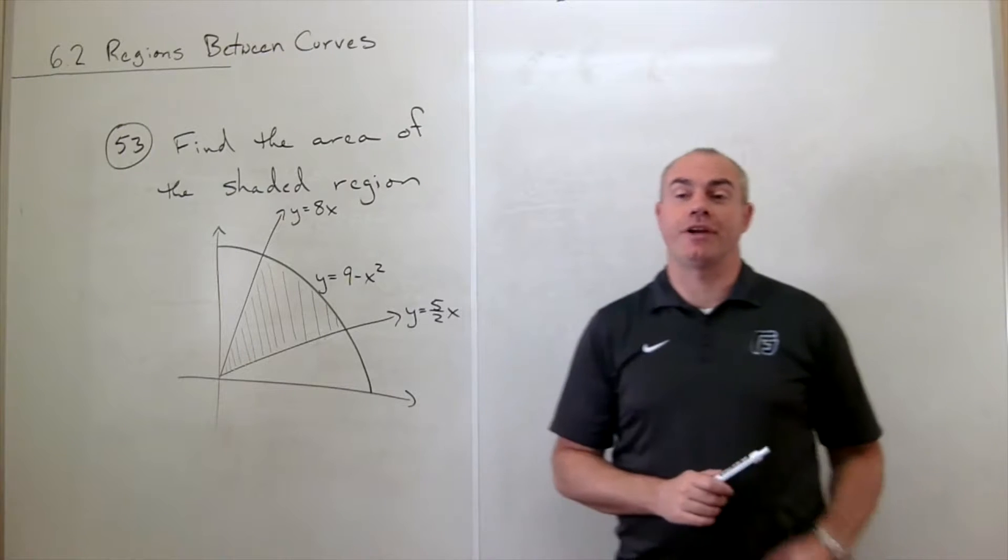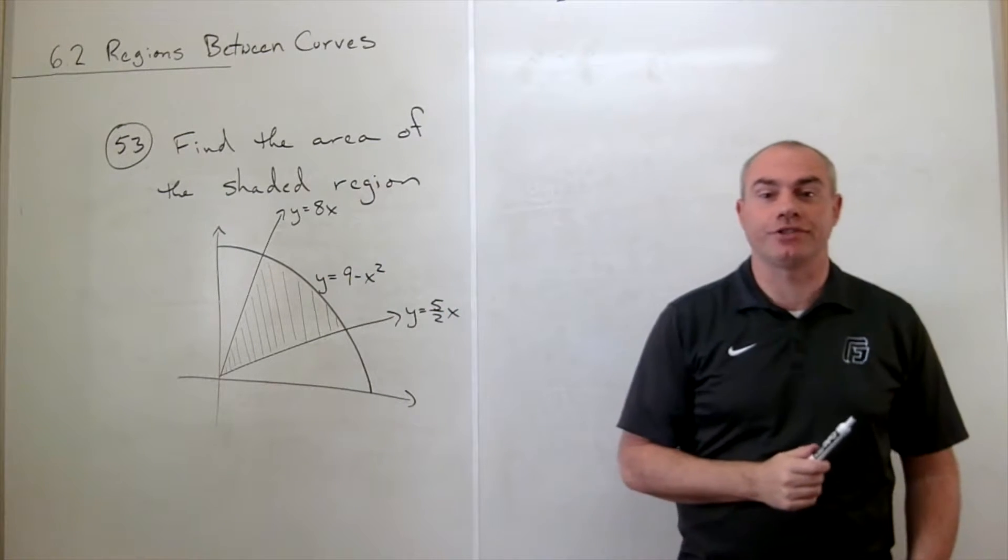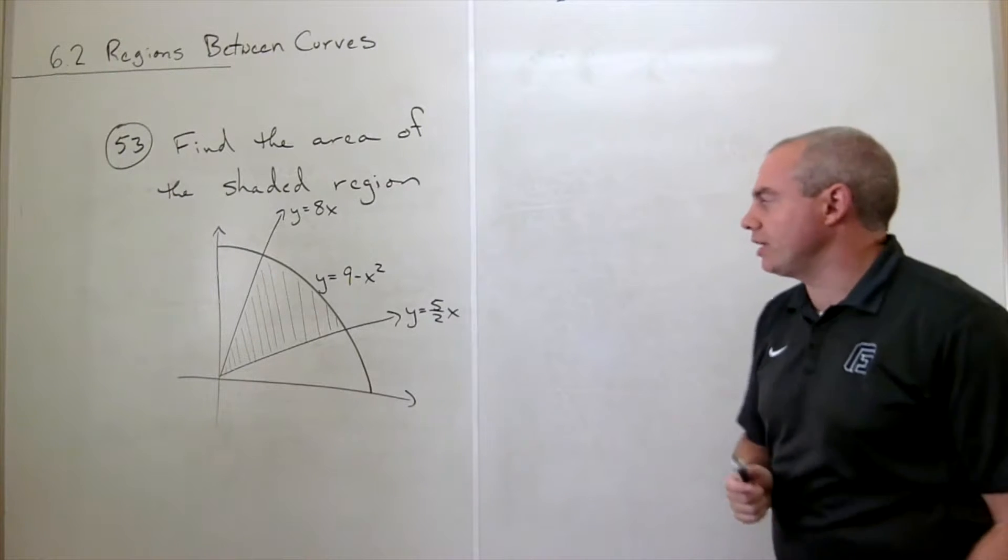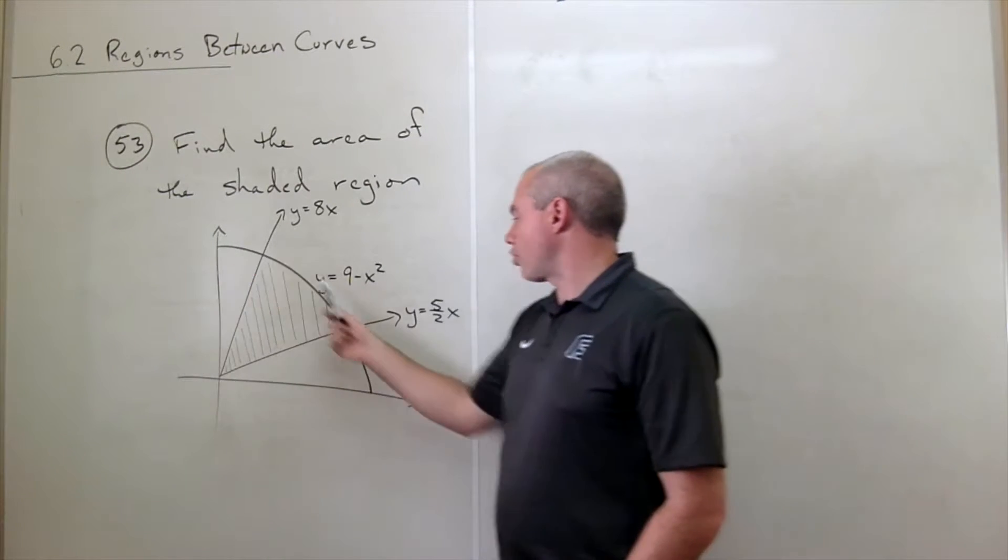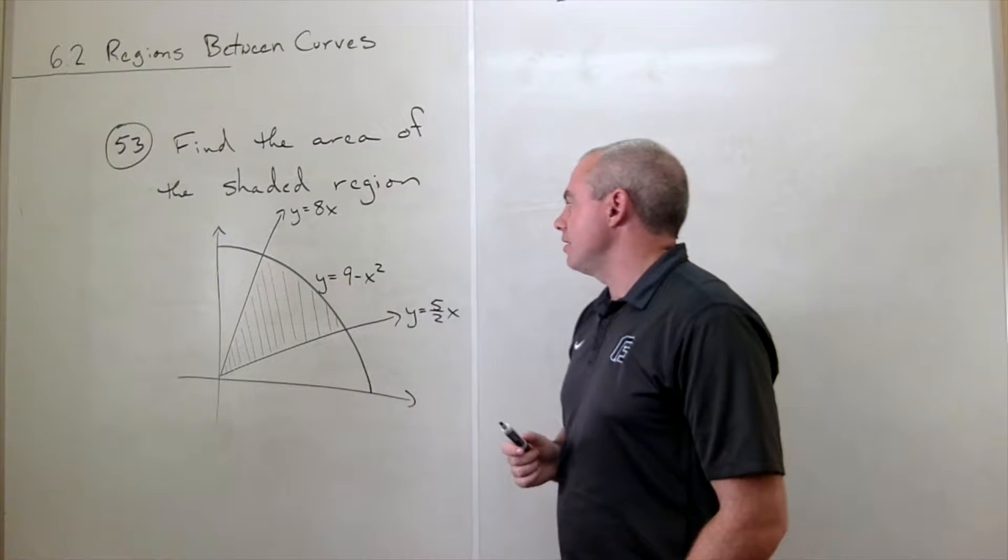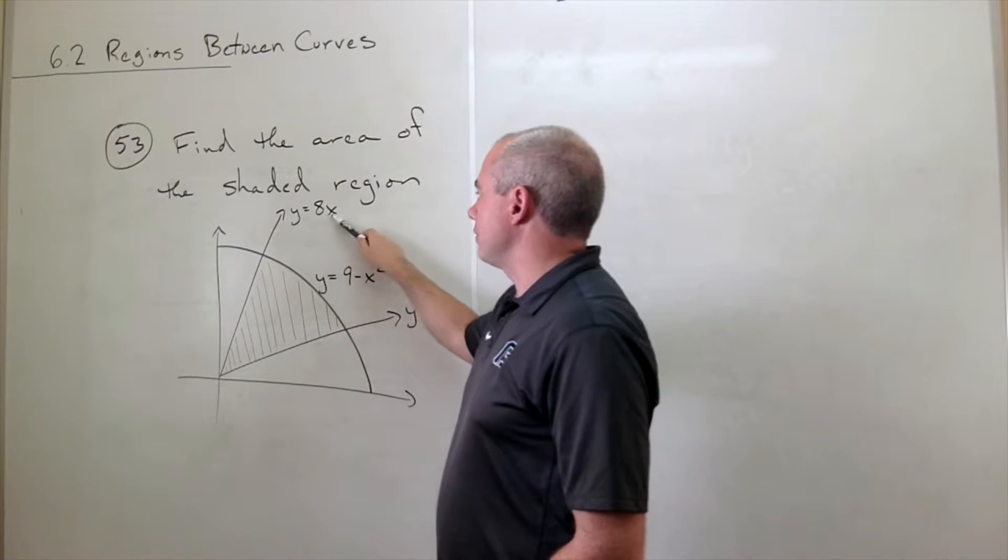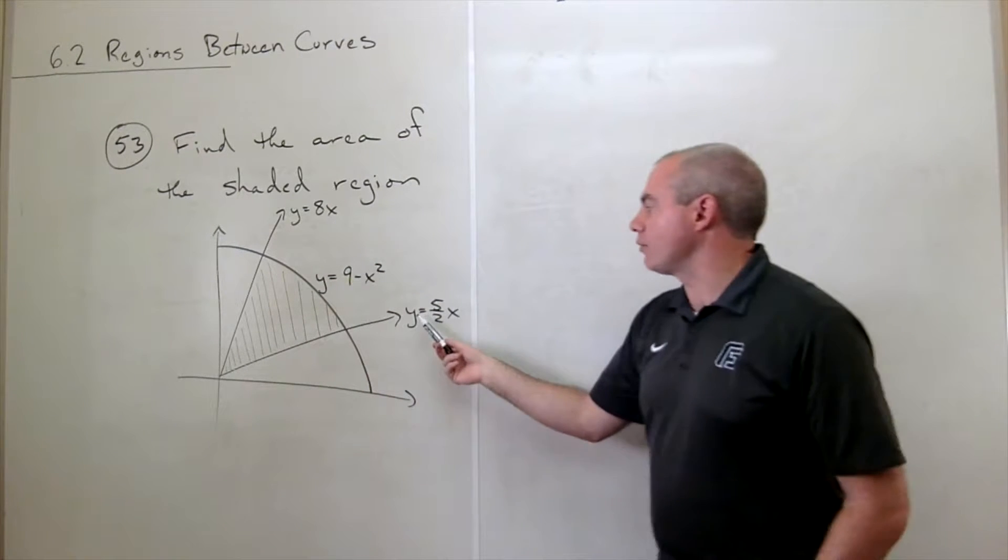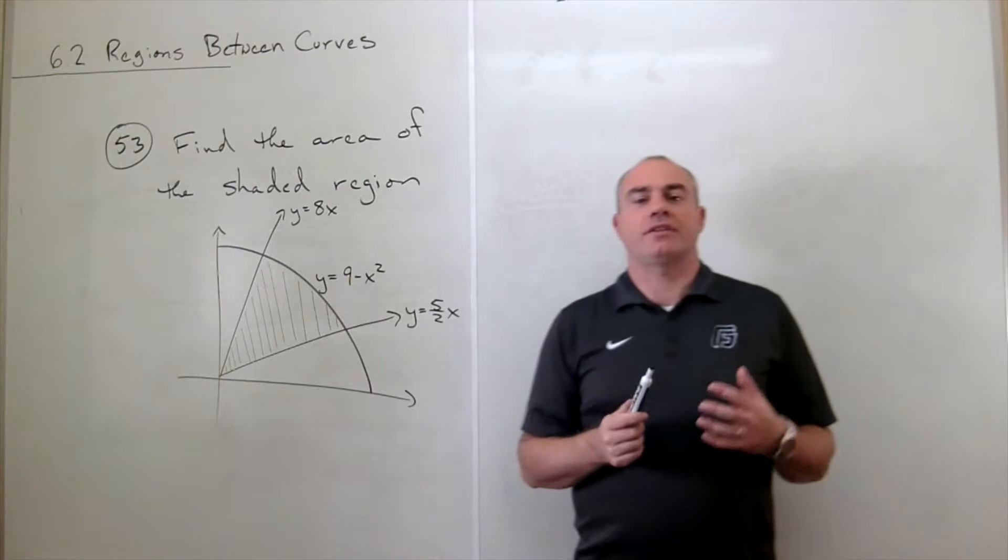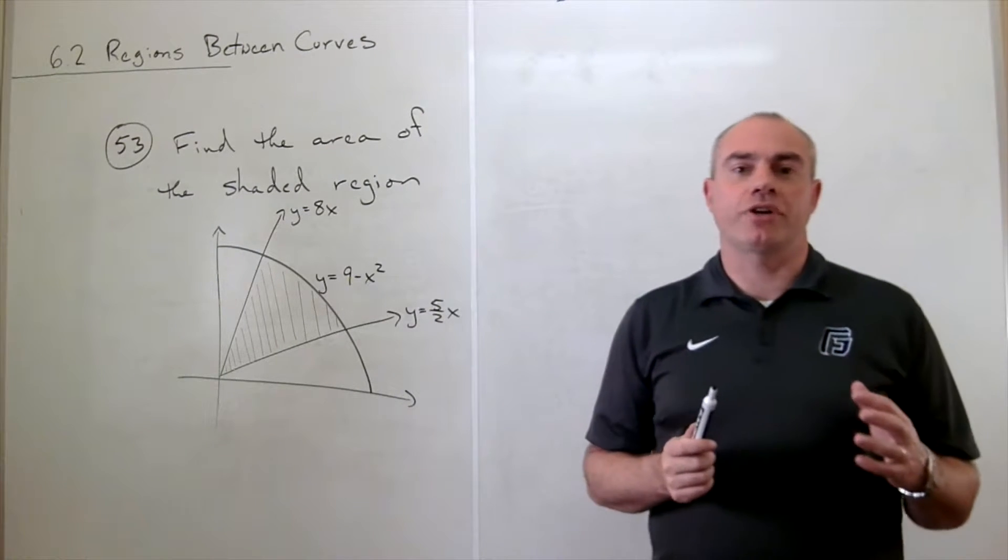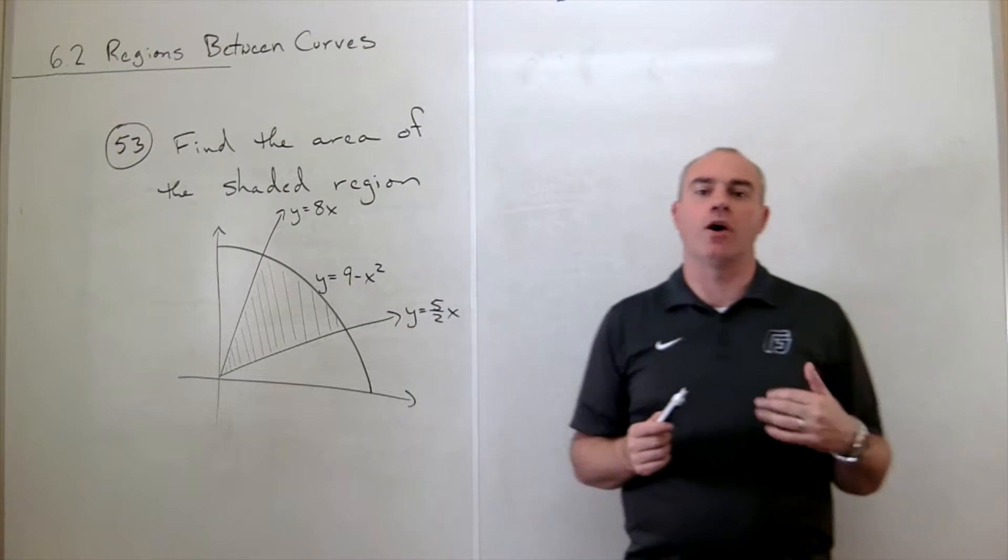In problem number 53 we'd like to find the area of the shaded region here. So we have three curves that are bounding this region. We have this parabola y equals 9 minus x squared, this line y equals 8x, and another line y equals 5 halves x. The thing that can make this problem just a little bit tricky is that there's no clear upper function and lower function.